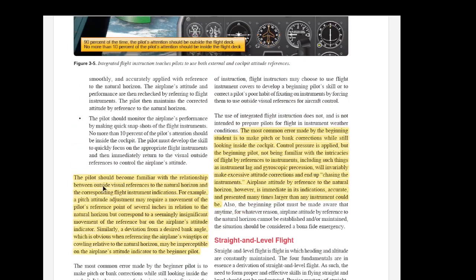The pilot should become familiar with the relationship between outside visual references to the natural horizon and the corresponding flight instrument indications. For example, a pitch attitude adjustment may require a movement of the pilot's reference point of several inches in relation to the natural horizon, but correspond to a seemingly insignificant movement of the reference bar on the airplane's attitude indicator. Similarly, a deviation from a desired bank angle, which is obvious when referencing the airplane's wingtips or cowling relative to the natural horizon, may be imperceptible on the airplane's attitude indicator to the beginner pilot.